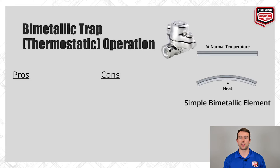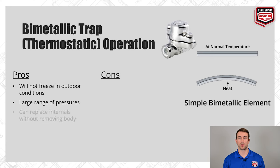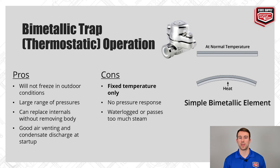The bi-metallic trap operation: the metal strips deflect differently based on different thermal expansion properties. Some pros are that it will not freeze in outdoor situations, it can handle a large range of pressures, you can replace the internals without removing the body from the line, and it has good air venting and condensate discharge at startup. Some cons are that it only works within a fixed temperature range, has no pressure response, and it can become waterlogged or pass too much live steam.